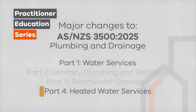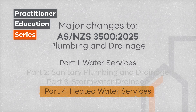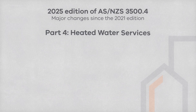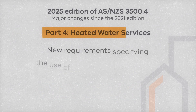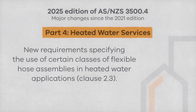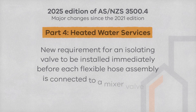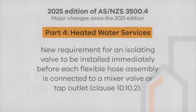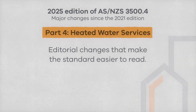We'll now look at the changes in Part 4 of the AS3500 series for the 2025 edition. There are new requirements for the use of flexible hose assemblies in heated water installations, requirements for isolation valve installation before each flexible hose connected to a mixer valve or tap outlet, and editorial changes that make the standard easier to read.